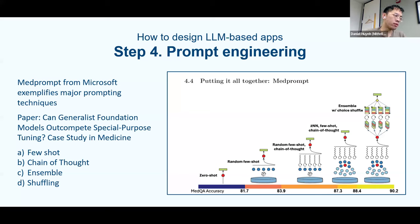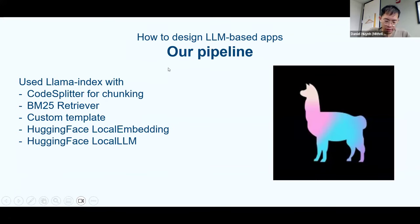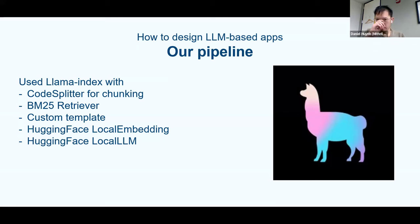In our case, we did few-shot and chain of thought to get started. If you want to get started quickly, try prompt engineering, because fine tuning is a bit costly especially for a hackathon. In the end, what did we do? We took Lama Index, used a code splitter to chunk the HTML, BM25 retriever, and a prompt template slightly modified to include few-shot examples. I wanted something fully open source and local, so I used local embeddings — I think it was BGE — and a local model.